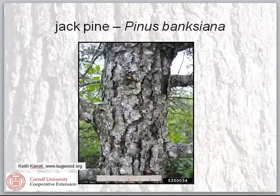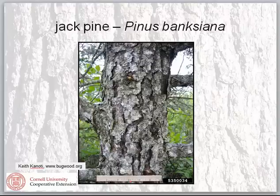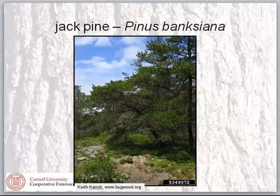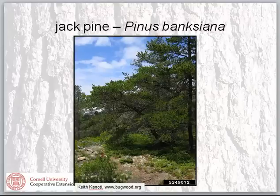Jack pine bark is dark and blocky. It can be limby when growing in early successional open habitats, retaining lower branches. It's not typically considered a timber species for pulpwood. However, it serves an important ecological niche — able to survive in harsh conditions, infertile sandy soils, and rocky outcrops where other species like white pine and red pine could not establish. It can stabilize soil, provide shade, and create habitat features those other species cannot.